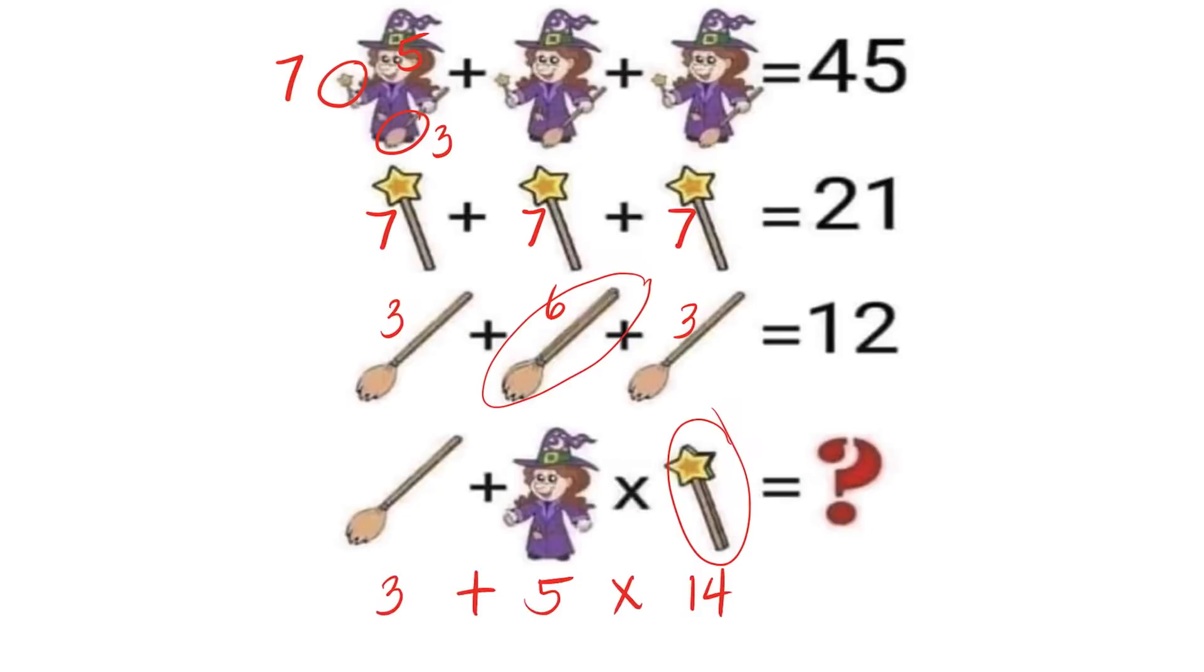So using the order of operations, we need to multiply first: 5 times 14, which is 70. And then we need to add the 3. So the answer for this problem is 73.